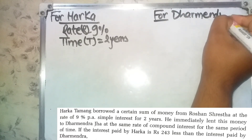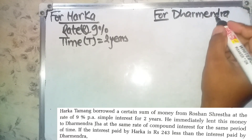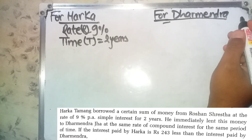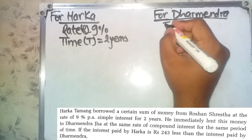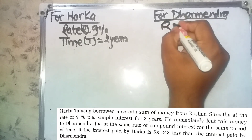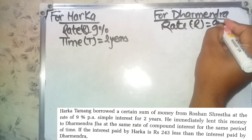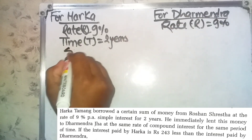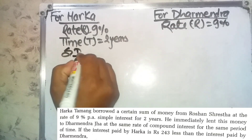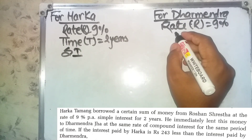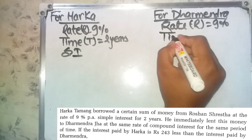For Dharmendra — he immediately lent this money at the same rate, r equals 9%, compound interest, for the same period of time, 2 years.